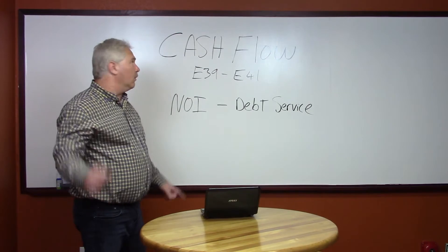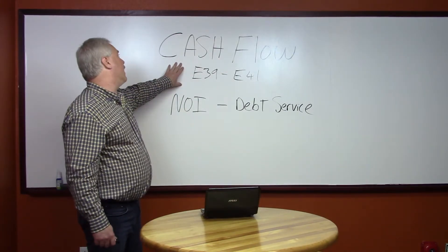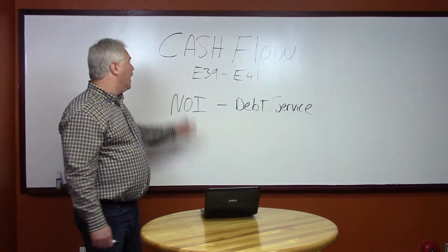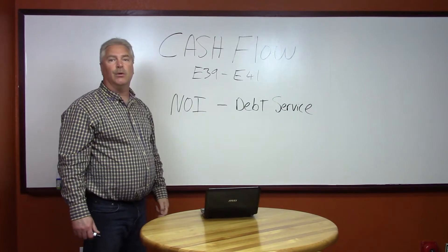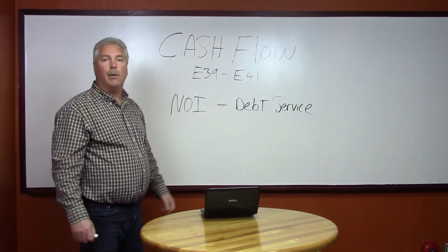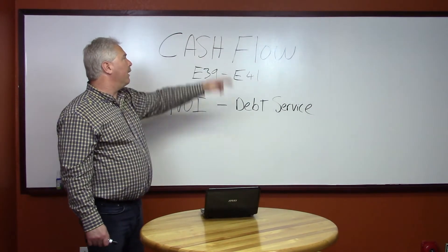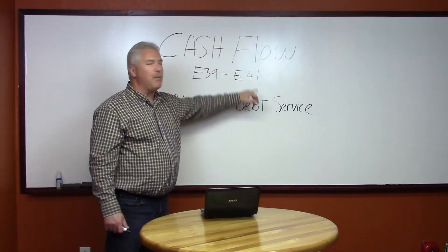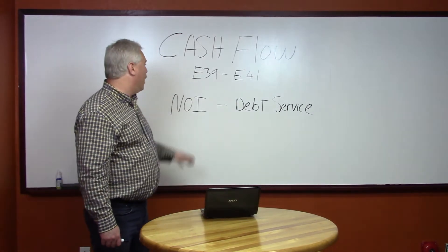Let's talk about cash flow. This is why we're in it. Everybody likes cash flow — mailbox money, cash in your pocket, allows you to retire early with residual income so you can live just about anywhere you want. This is what it all comes down to. Cash flow, to me, is E39 minus E41 in my spreadsheet — but joking aside, what it really is is NOI minus debt service.